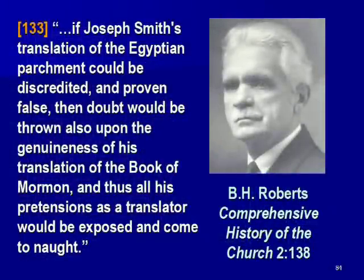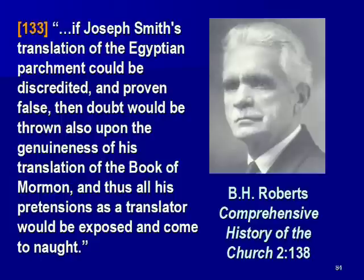This is important, though — they have to defend it. And I'll close with this quote. The reason they have to defend it is, I think, B.H. Roberts understood the situation quite well. In his Comprehensive History of the Church, Volume 2, page 138, he says: 'If Joseph Smith's translation of the Egyptian parchment could be discredited and proven false, then doubt would be thrown also upon the genuineness of his translation of the Book of Mormon, and thus all his pretensions as a translator would be exposed and come to naught.' B.H. Roberts understood the severity of this, and this is why Mormon scholars continue to defend the undefendable. They know that once that domino falls, they all start falling — and we find out that Joseph Smith wasn't the prophet he claimed to be. That, in fact, he was a false prophet — a deceiver and not one to be trusted.